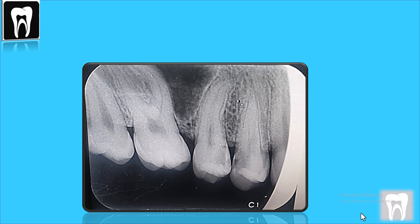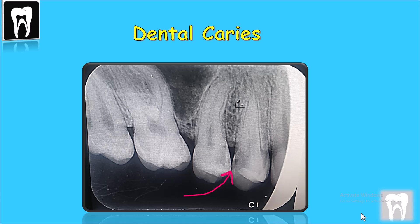Then we have these two radiolucencies near the contact of the premolars, and these are dental caries. How did I find out? Because there is a notch in the enamel right where the contact is, and it's spreading out towards the DEJ — the dentin-enamel junction — towards the dentin.